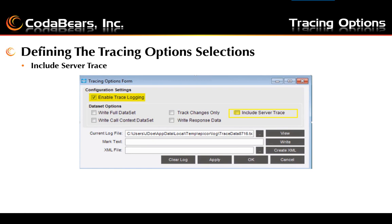Include server trace: this checkbox should be selected to include information from the server processing in the client log. This will show what server methods are called and impacts on the server performance. Use the performance tuning guide to gain additional information on using this option, which explains how you can set up custom trace logs additionally. Often this might be a checkbox that you would check if you needed to troubleshoot and work with Epicor for performance issues.